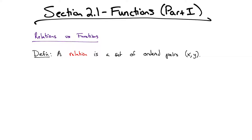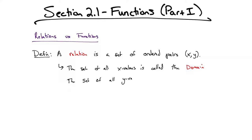It's relating x and y in the sense that when x is squared and y is squared, they need to equal 4. A sub-definition: the set of all x values is called the domain of the relation, and the set of all y values is called the range. We'll deal more with range later, but for now we're mostly going to talk about domain. Let's look at an example.